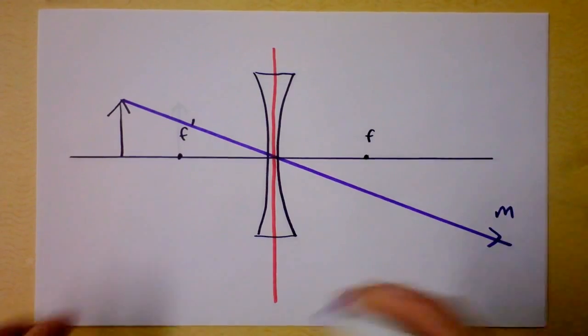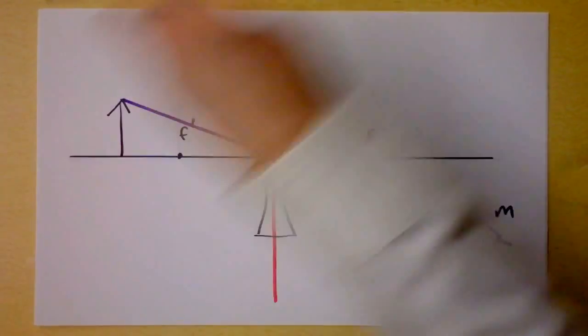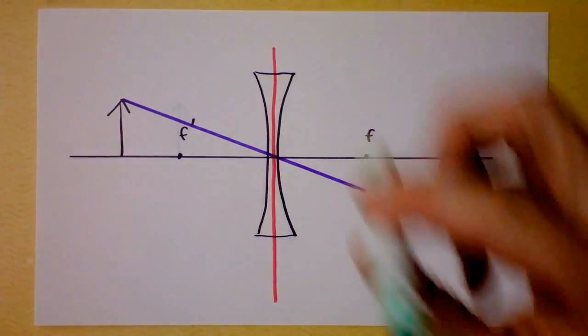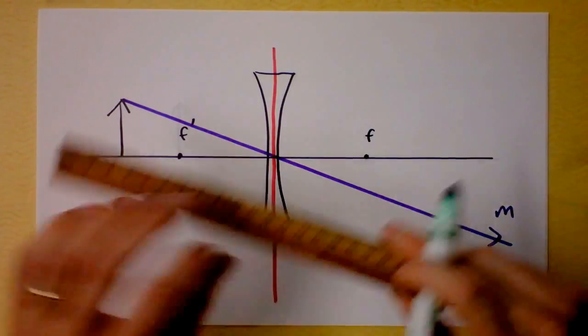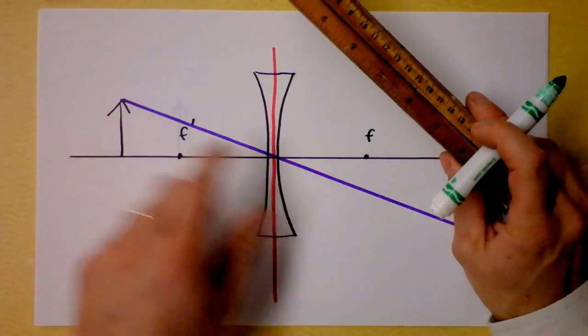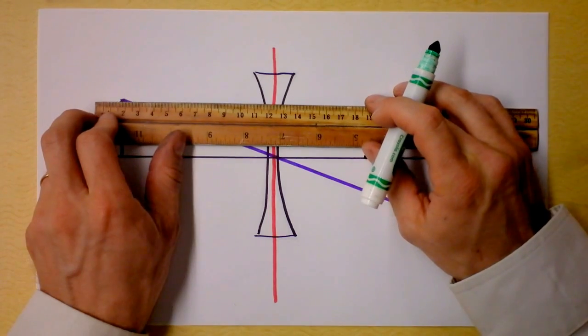This is my M-ray. Then my P-ray comes in here in green, and the P-ray is supposed to come in parallel.